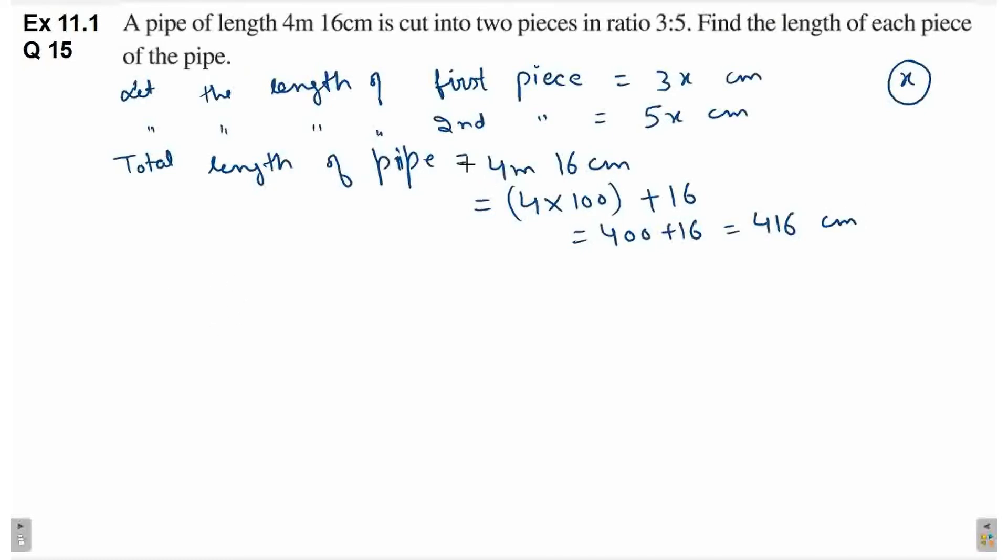According to the question, jab hum in dono pieces ki length ko add karenge, that will give us the total length of pipe. So, 3x plus 5x is equal to 416.